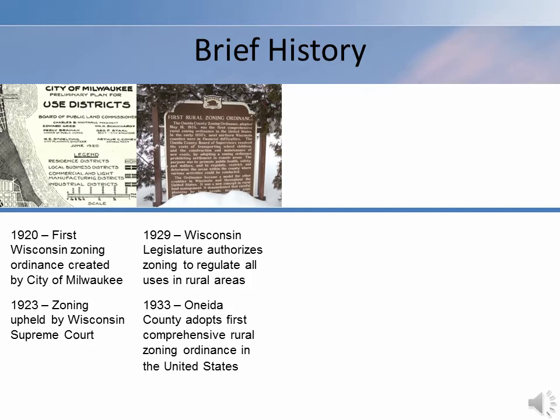In 1923, the state legislature authorized the use of zoning by counties to regulate the location of commercial and industrial establishments in unincorporated areas, subject to town approval. In 1929, they expanded this authority to allow for the management of all uses in rural areas. By 1933, Oneida County adopted the first countywide zoning ordinance using this authority, also considered the first example of a rural zoning ordinance in the United States.